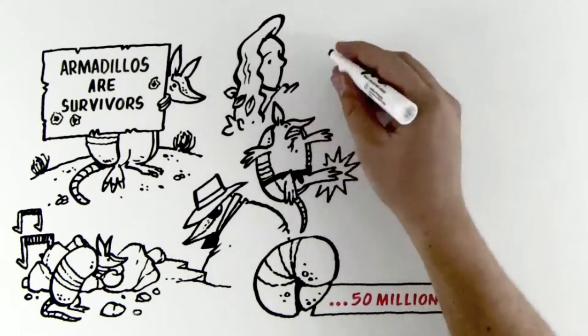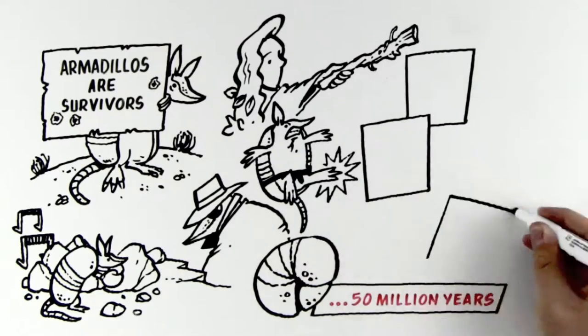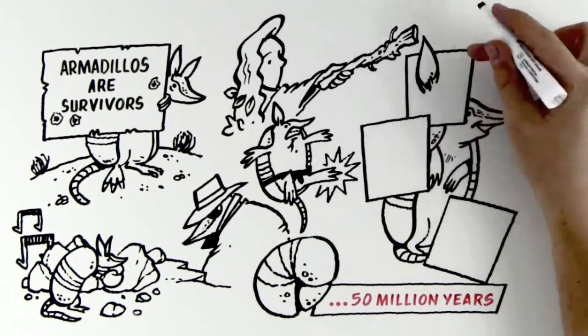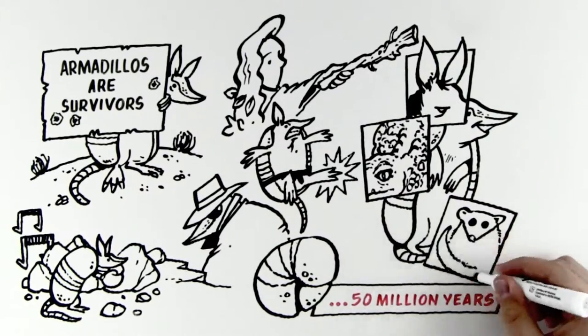Despite Mother Nature letting them have it with the ugly stick, there's a certain amount of charm about the armadillo. Some have described it to have the ears of a mule, the armor of an alligator, and the tail of a possum.